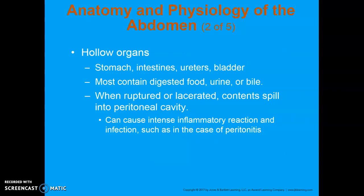There are two different types of organs: hollow organs and solid organs. Your hollow organs are going to be your stomach, intestines, ureters, and bladder. These mostly contain digested food, urine, or bile. When they rupture, all of that stuff ends up getting spilled within the cavity, so you can get an intense inflammatory reaction and possible infection. Peritonitis is that type of inflammation. It's serious and can definitely become life-threatening.